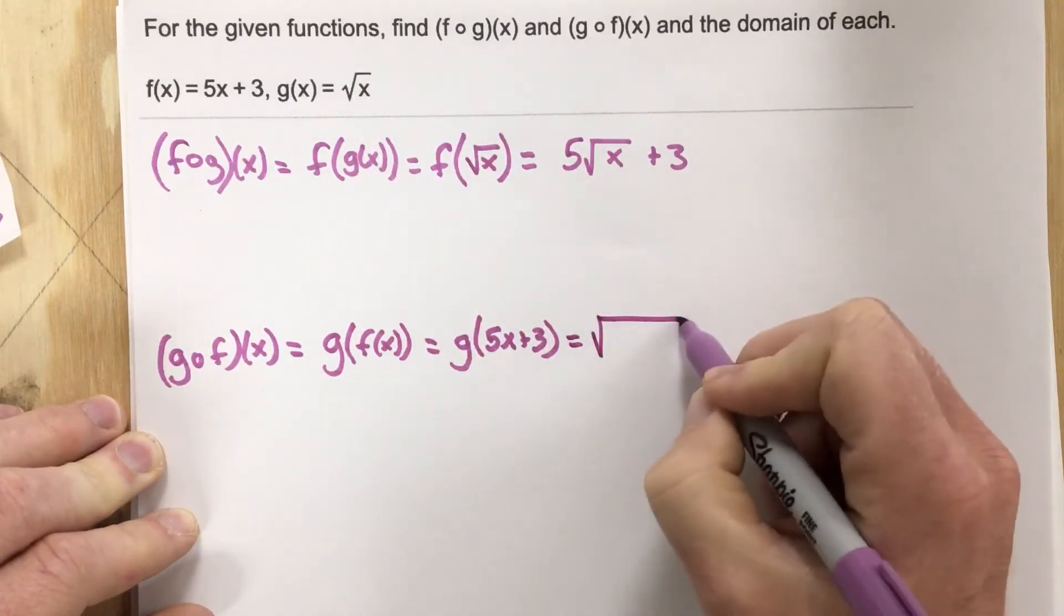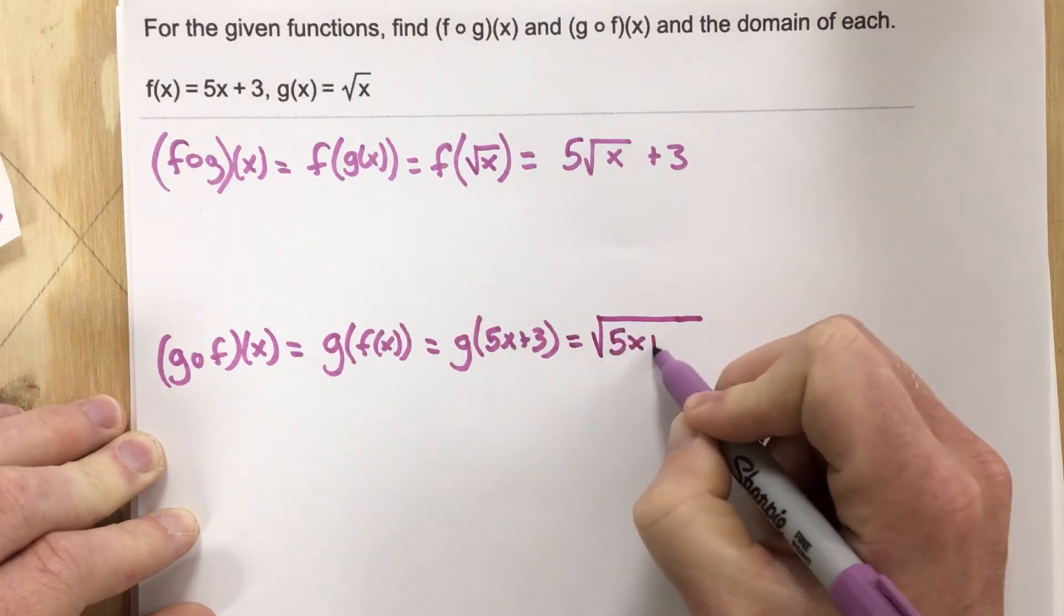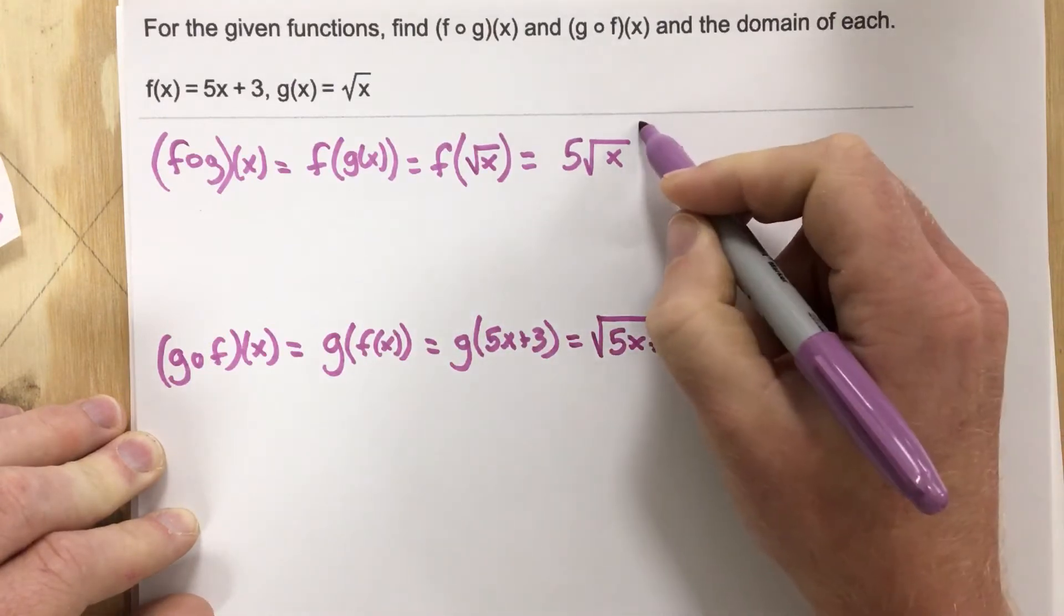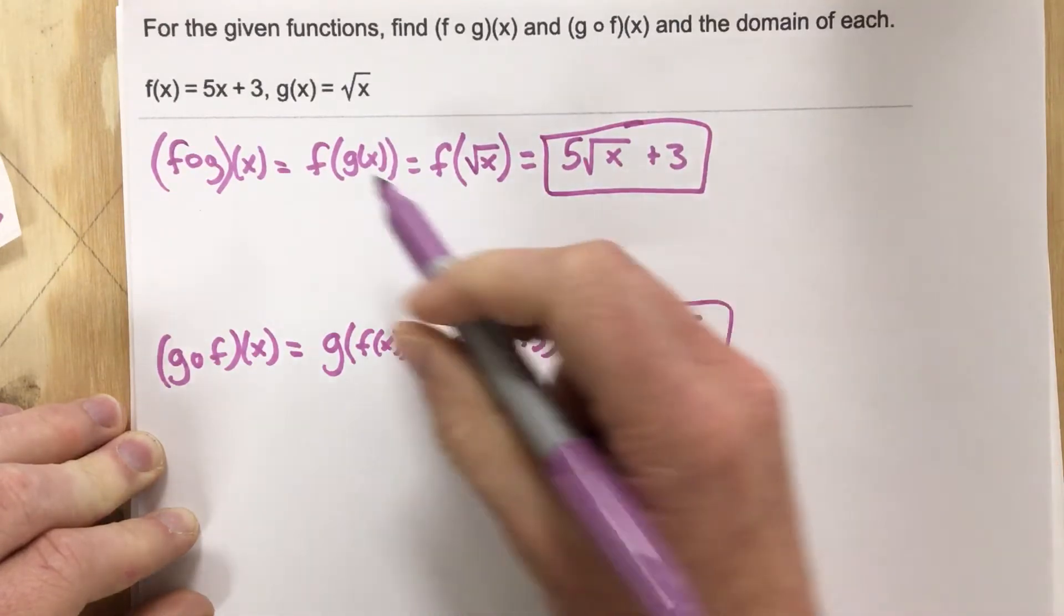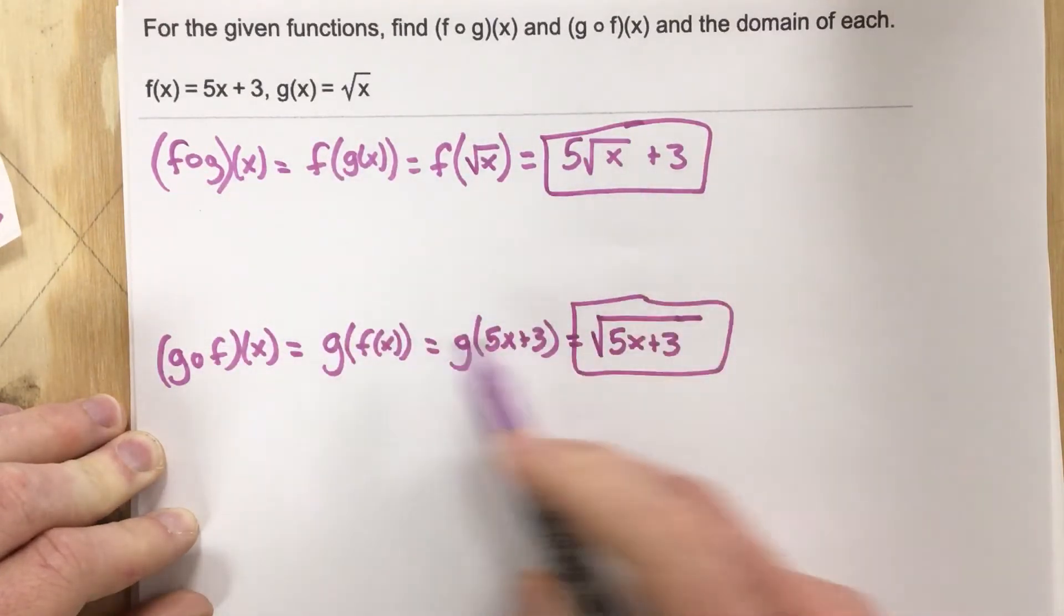I'm going to plug 5x plus 3 into the g function for x, so that's going to be the square root of 5x plus 3. We've got f of g of x here and g of f of x here.